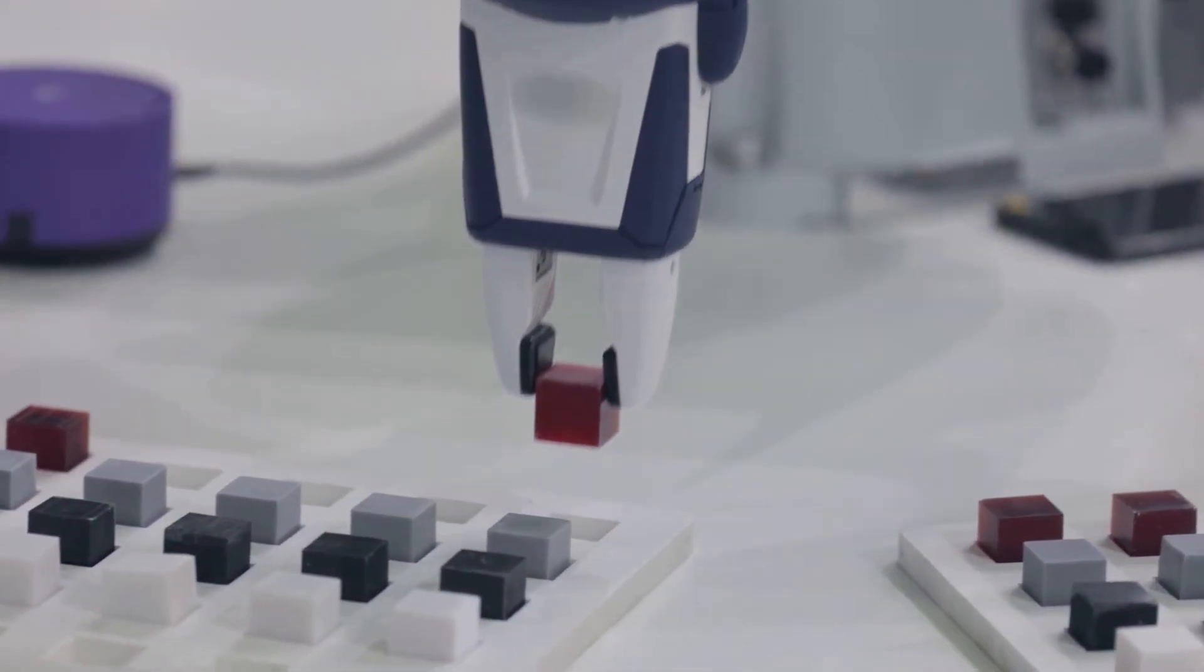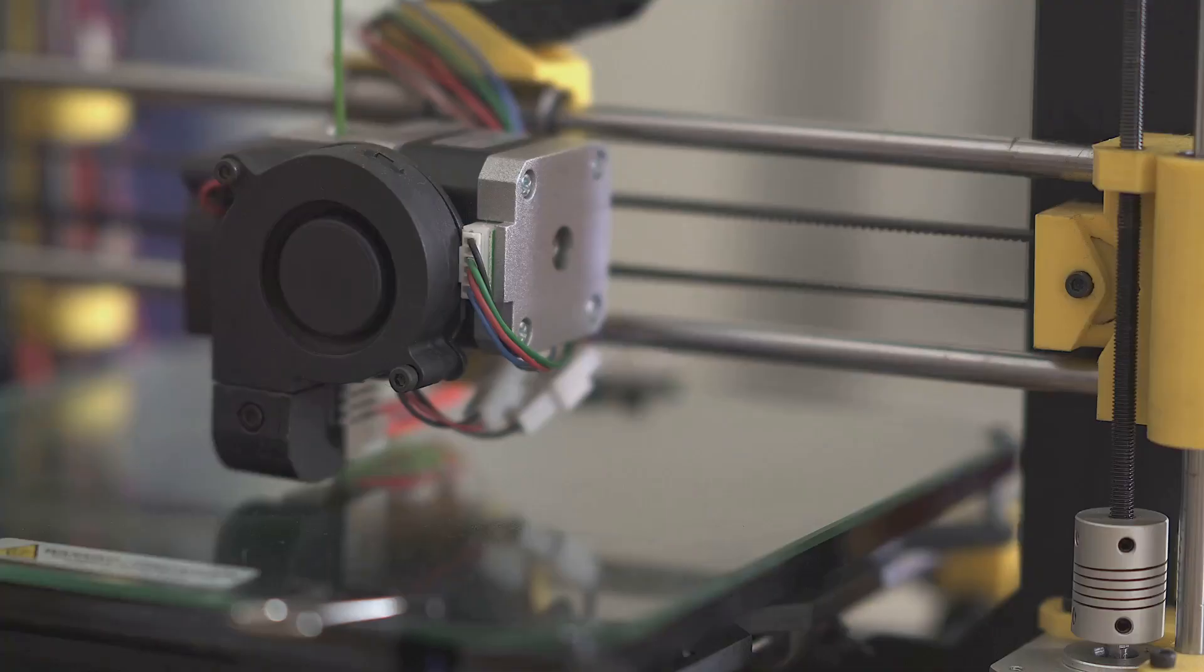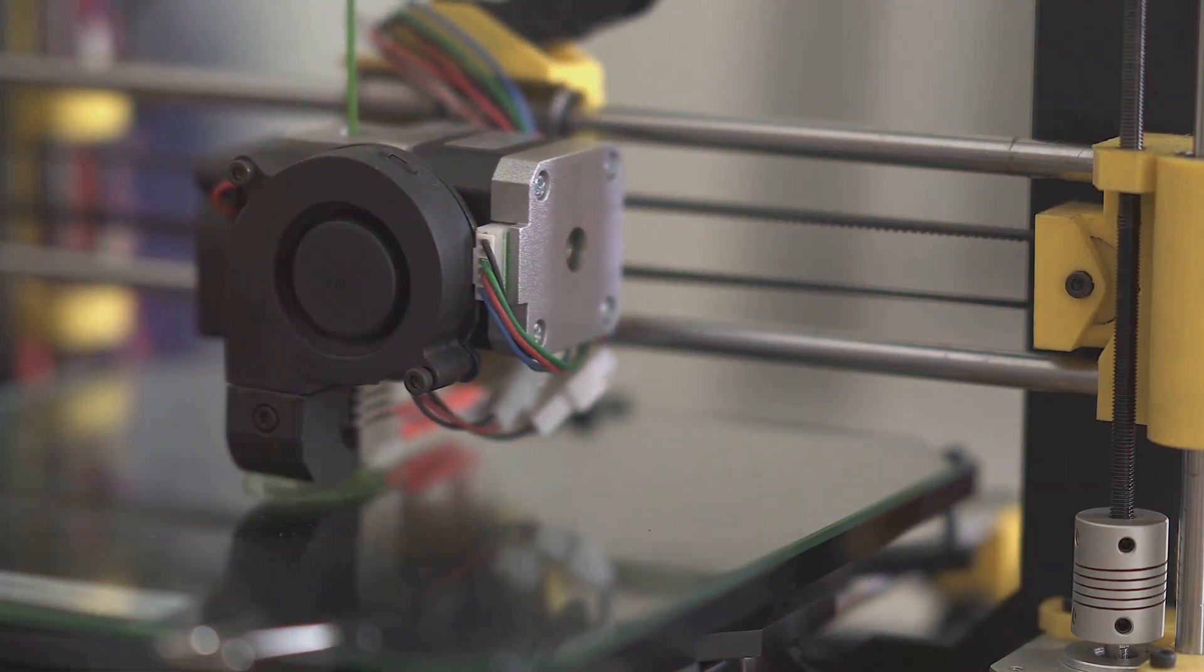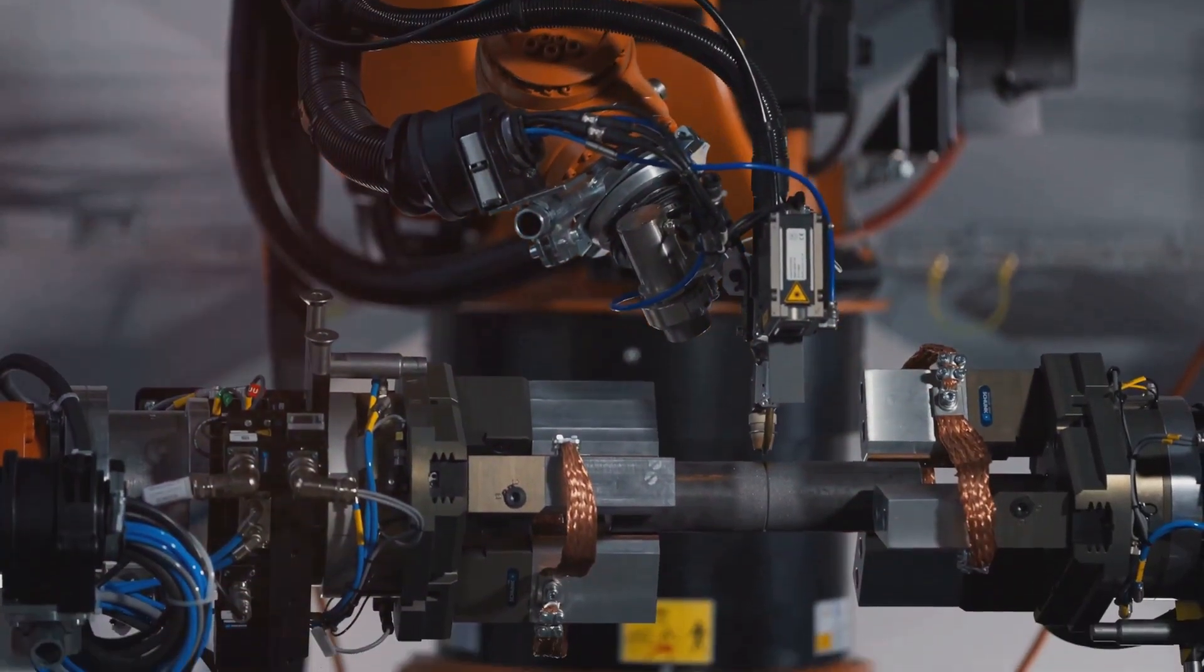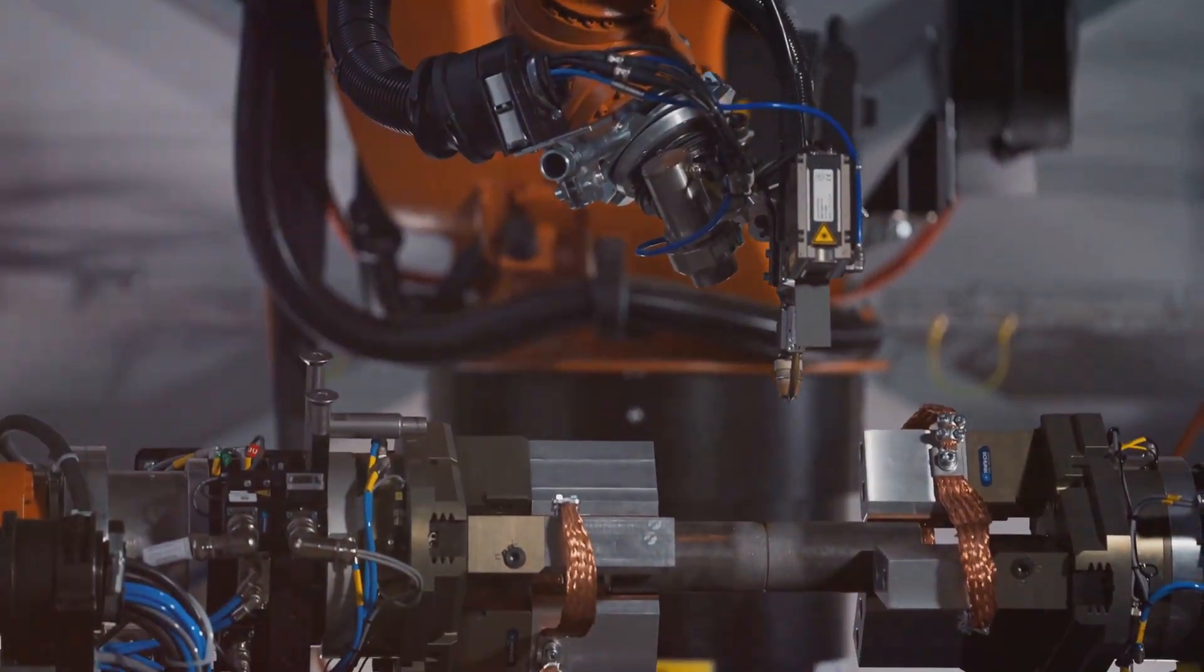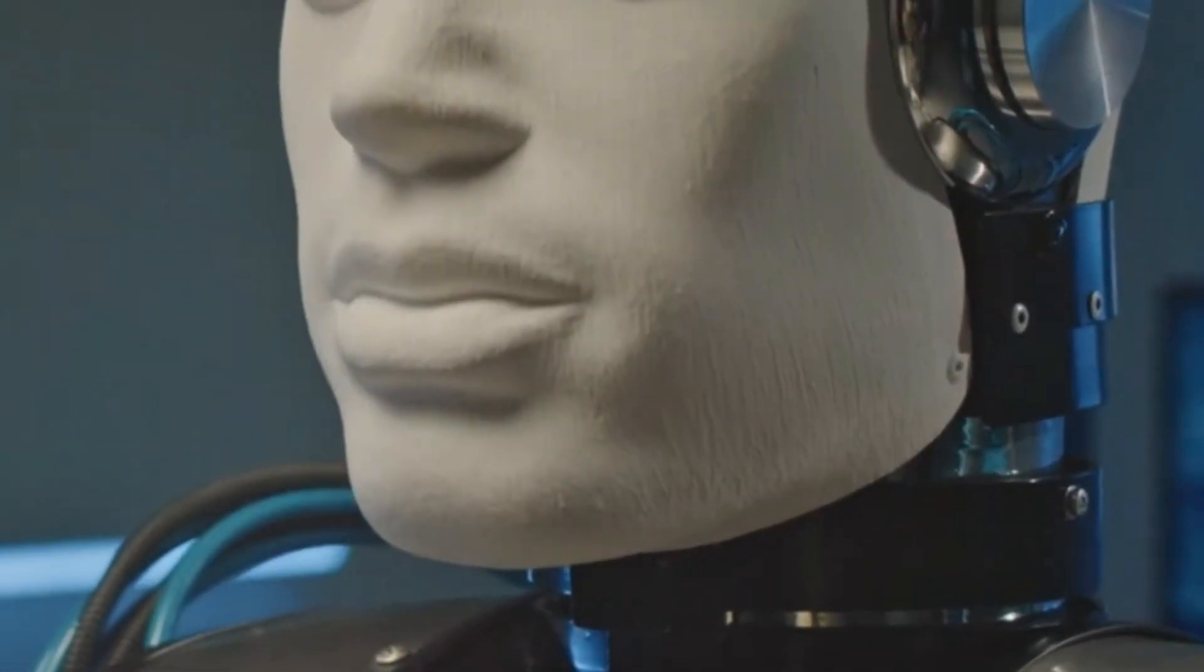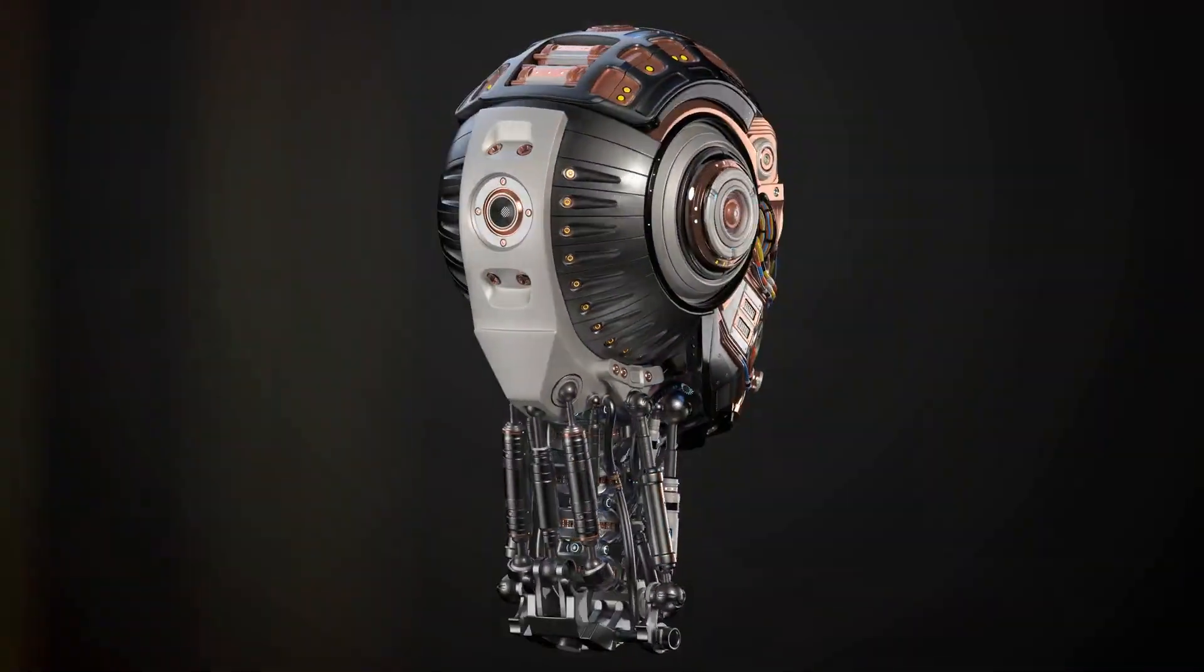Robots work seamlessly alongside human engineers, each complementing the other's strengths. State-of-the-art 3D printers churn out components with incredible precision and speed. The level of precision in this factory is remarkable, down to the smallest detail. Every detail is carefully considered from the internal mechanics to the external appearance. The robots are given lifelike skin, hair and facial features, making them almost indistinguishable from real humans.